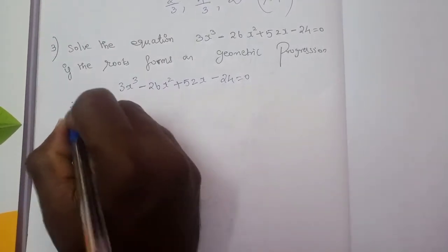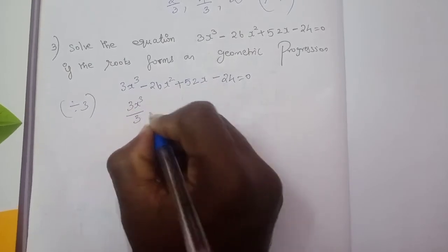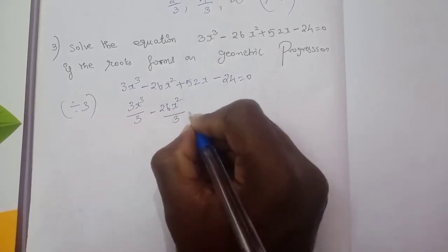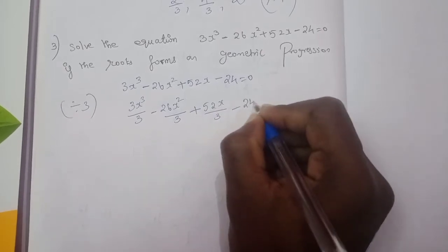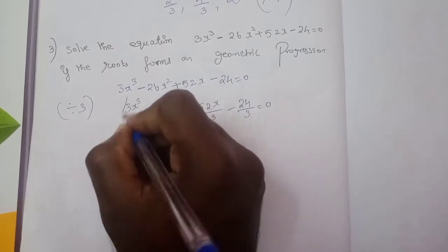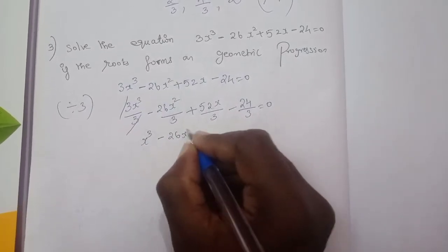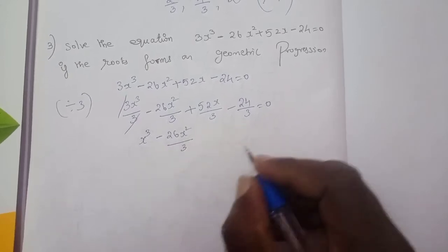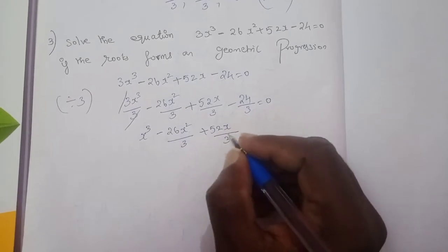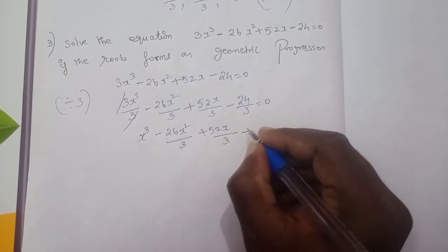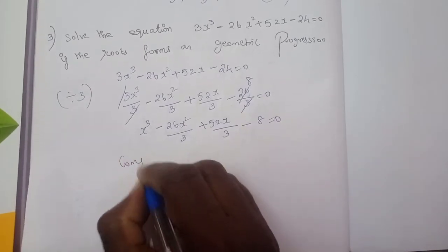First, divide the equation by 3. So we get x³ - (26/3)x² + (52/3)x - 8 = 0.